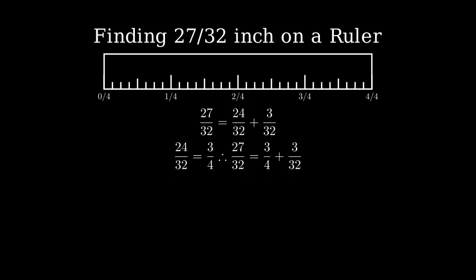Let's find this on our ruler. First, let's locate 3 quarters of an inch. That's this larger mark here. Now, from 3 quarters, we'll count three small marks to the right. 1, 2, 3. And there we have it.